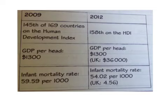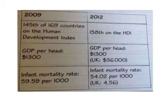GDP per capita remains very low — much lower than the UK's $36,000. The infant mortality rate was 59.59 per thousand and is currently 54.02 per thousand — slightly better, but still far higher than the UK figure of 4.56 per thousand.